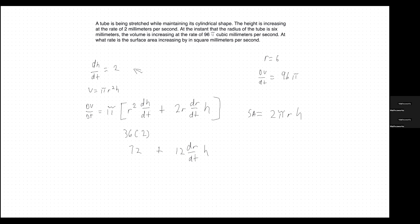Now let's multiply by π. That gives us 72π plus 12π · dr/dt · h, which is equal to 96π. It equals 96π because the problem tells us the volume is increasing at the rate of 96π cubic millimeters per second — that's a rate in relation to time — so dV/dt = 96π.